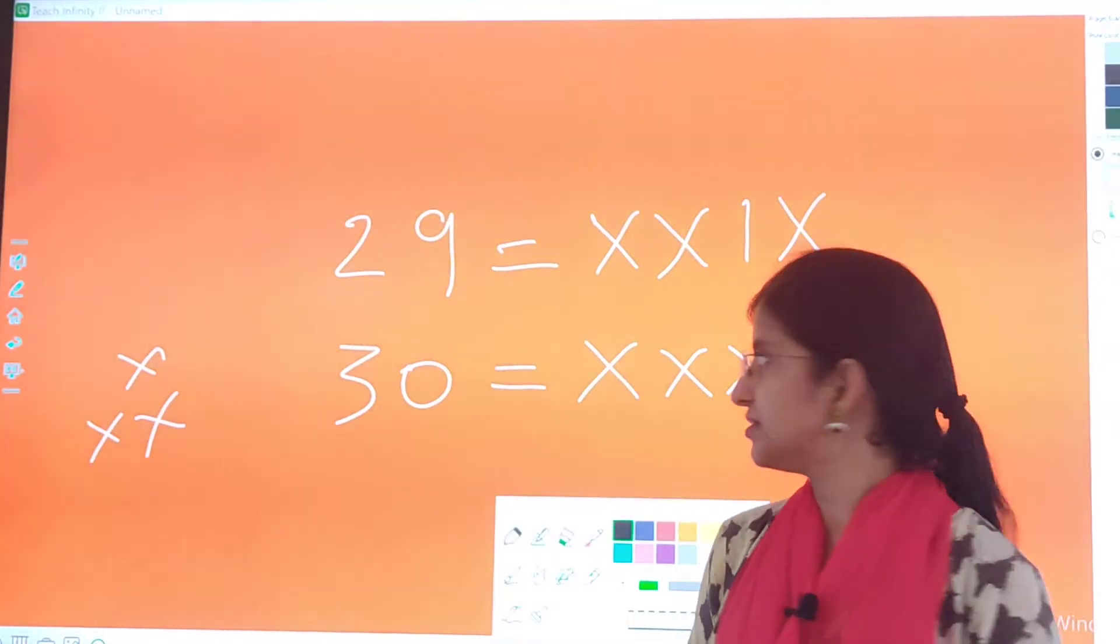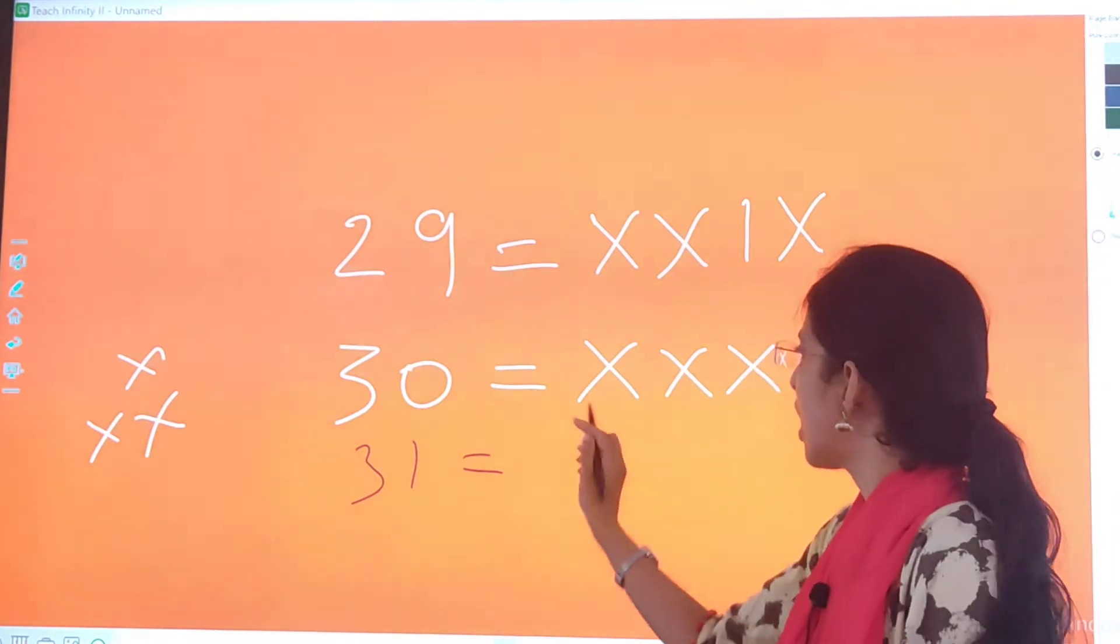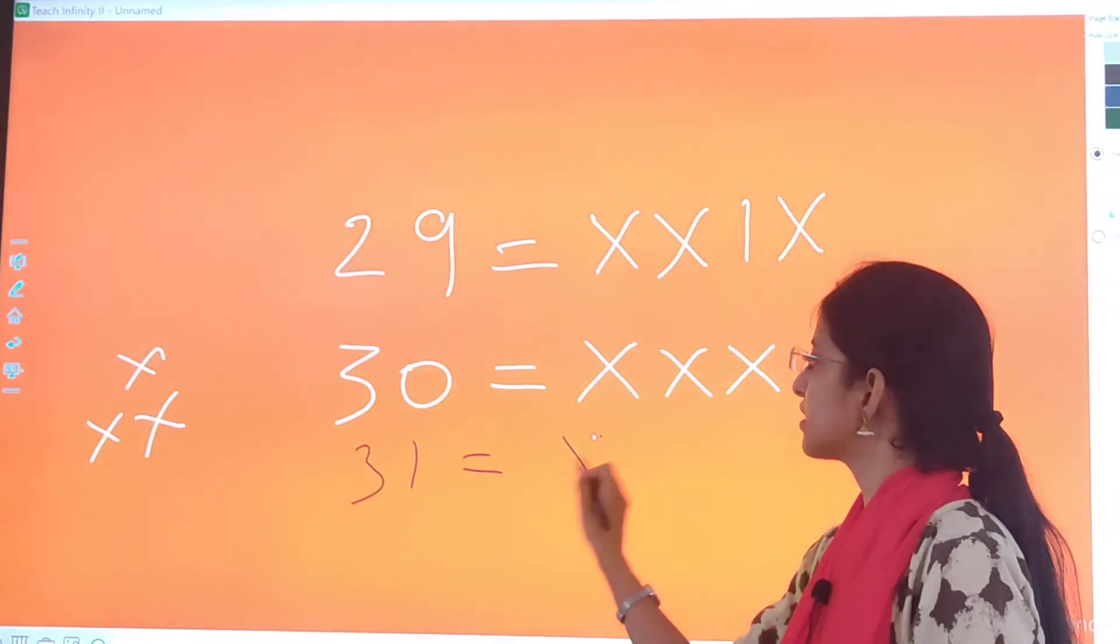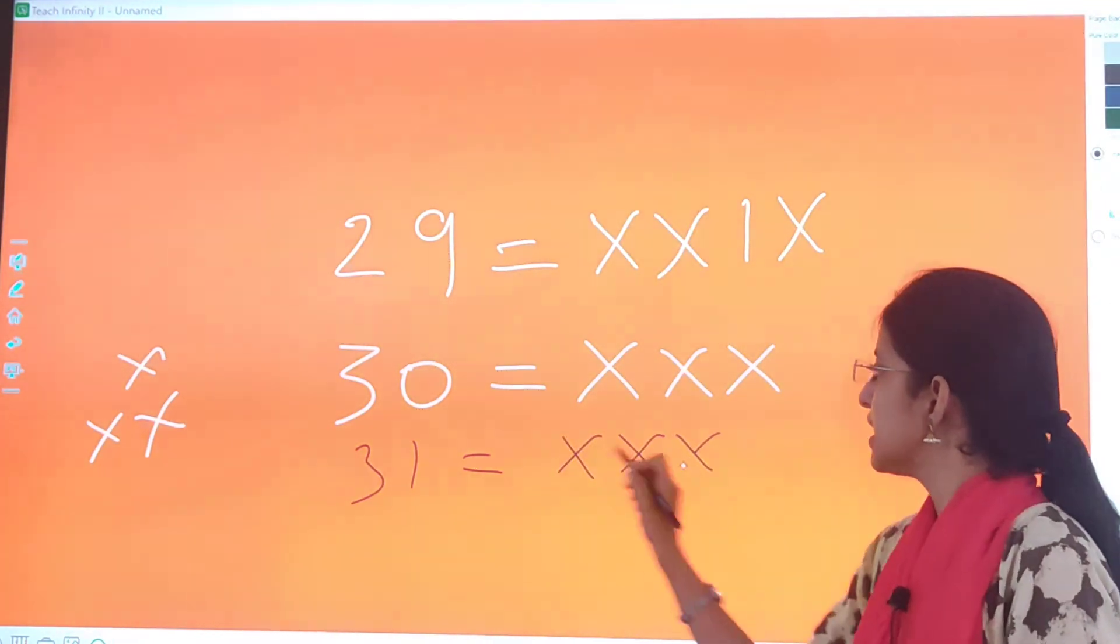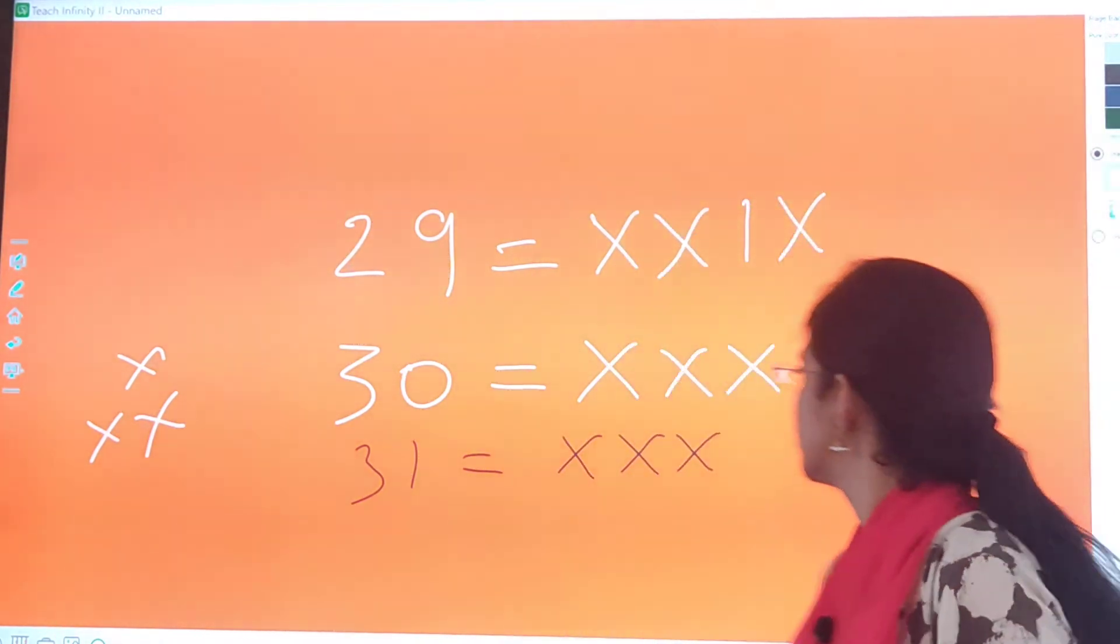Then comes 31. 31. Now 30 is represented like this, so we will write 30. Then comes 1. And how is 1 represented? By single I. So this is how 31 is represented.